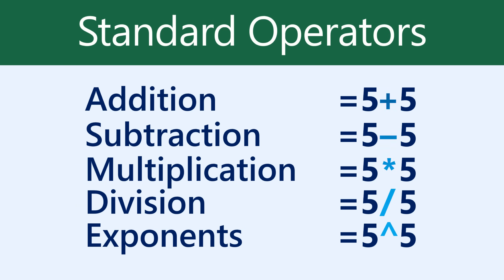You're probably used to seeing equations like 5 plus 5 equals, but in Excel, the equal sign comes first. That's because the cell itself contains, or is equal to, the formula and its value.